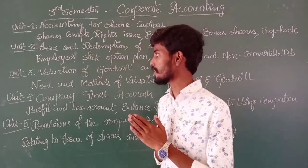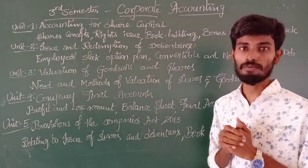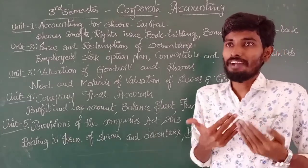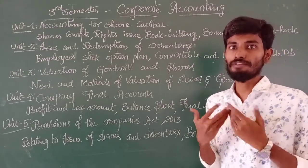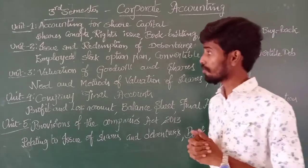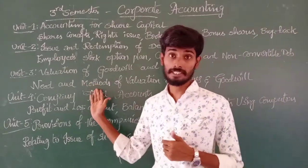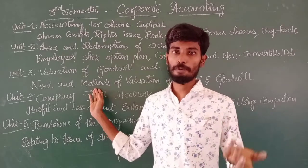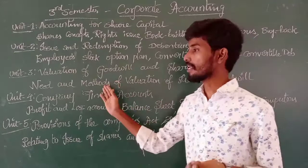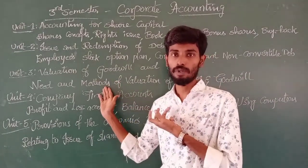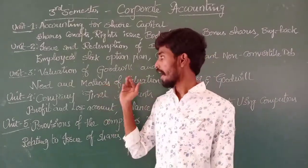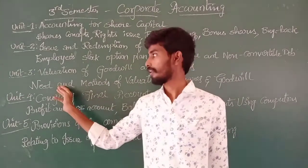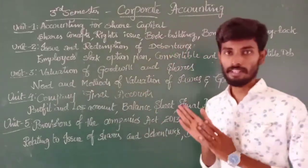According to the third unit, we have to see the valuation of goodwill and valuation of shares — in which way we have to value the goodwill and shares. In the third unit, we have to see the different methods, including the super profits method, and what is the need behind that.